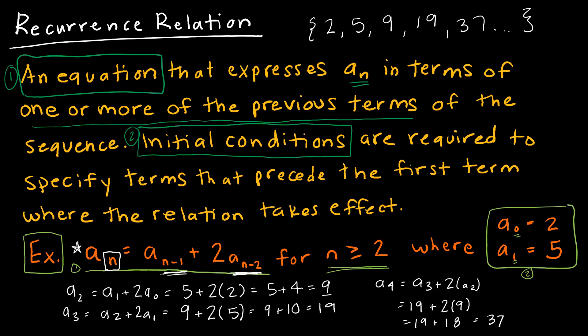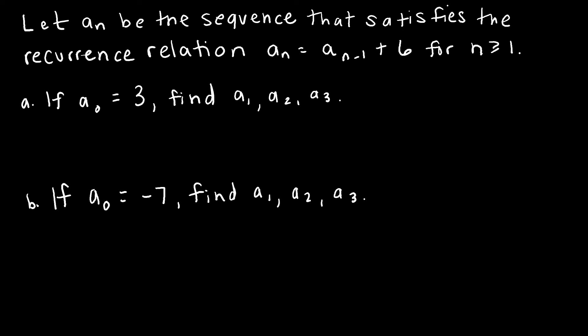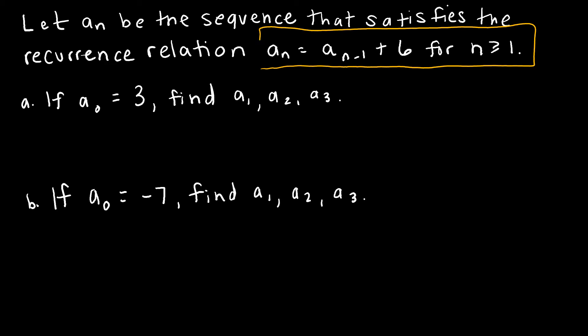The important thing is that a recurrence relation needs all of its parts: the equation, the specification of when that equation starts, and the initial conditions. Now let's look at a practice question — actually two parts dealing with the same recurrence relation: to find the next term, just take the previous term and add 6, for n greater than or equal to 1. That means they'll give us a(sub 0), and we need to find a(sub 1), a(sub 2), and a(sub 3).